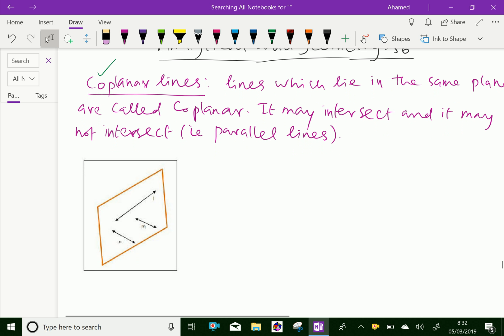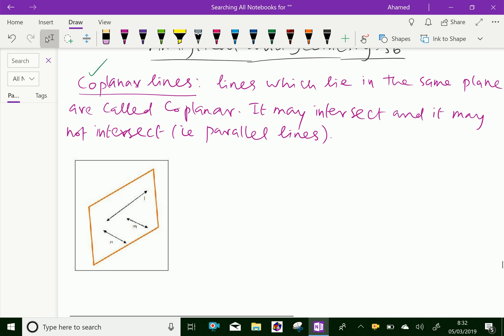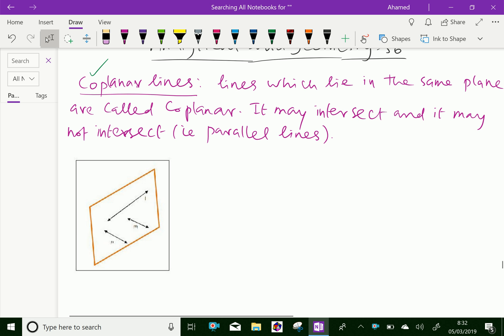Lines which lie in the same plane are called coplanar. They may intersect or may not intersect - that is, they may be parallel also. Coplanar lines always lie on the same plane and may or may not intersect.